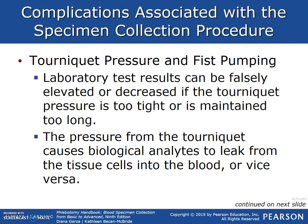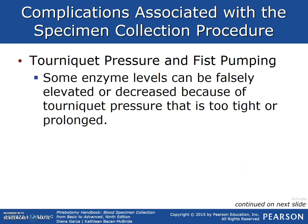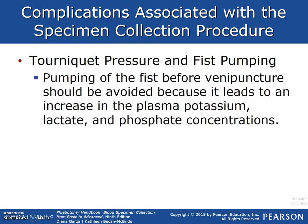Tourniquet pressure and fist pumping: laboratory test results can be falsely elevated or decreased if the tourniquet pressure is too tight or maintained too long. The pressure from the tourniquet causes biological analytes to leak from tissue cells into the blood or vice versa — this is known as hemoconcentration. Some enzyme levels can be falsely elevated or decreased because of prolonged tourniquet pressure. Pumping of the fist before venipuncture should be avoided because it leads to increases in plasma potassium, lactate, and phosphate concentrations.